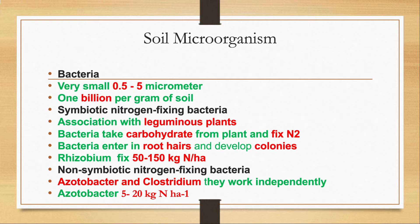Bacteria are very small in size, ranging from 0.5 to 5 micrometers. They are the most abundant microorganisms in soil — one teaspoon of soil contains up to 1 billion bacteria. Most bacteria are very important for soil and plants, while some cause disease. Heterotrophic bacteria depend upon soil organic matter or living organisms for their food.